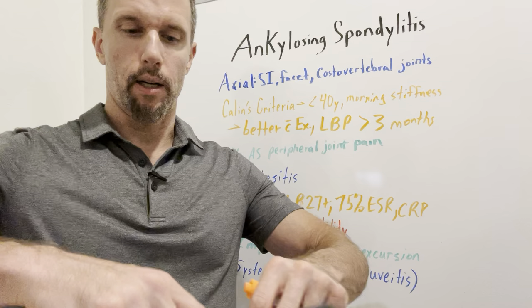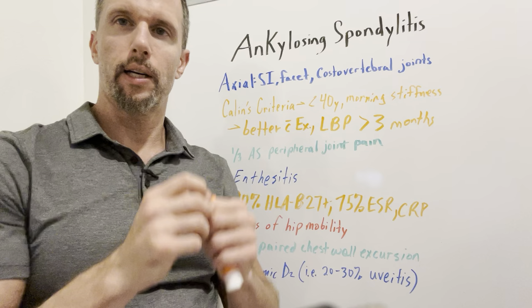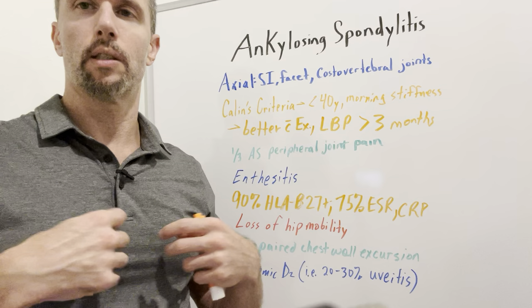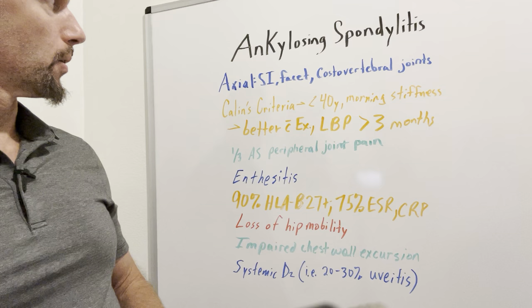We have costovertebral joints where the ribs come around and insert on the thoracic vertebrae. Those can become inflamed and eventually ossify. The joints that come around the front — the costovertebral joints — all that can have issues as well.